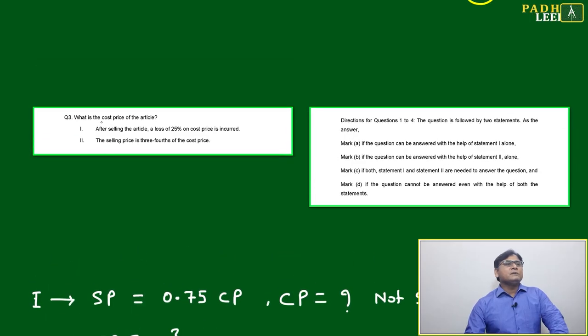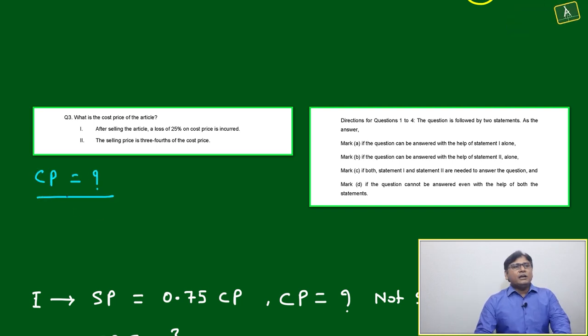Come to question number three. Question number three is asking what is the cost price of the article, meaning we have to find the cost price. That is our question. Now we'll take the help of the statements.